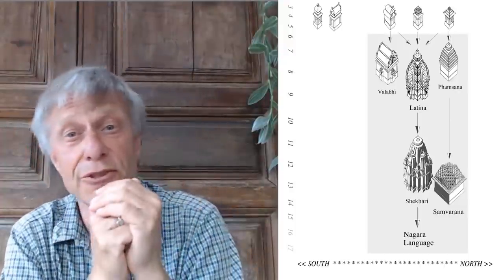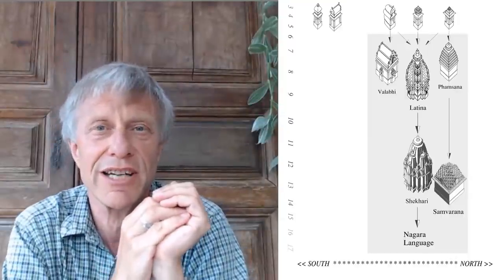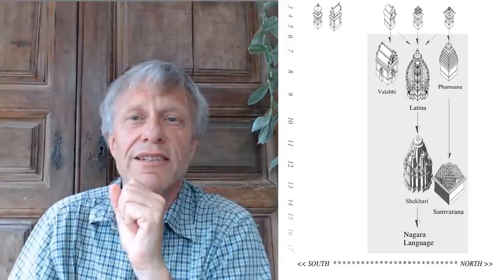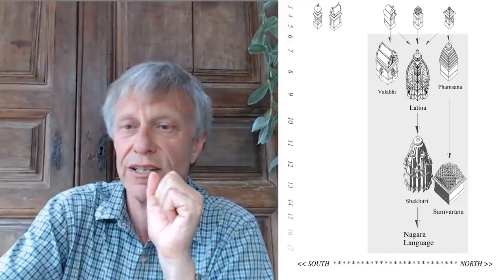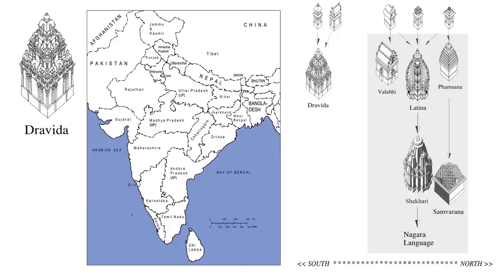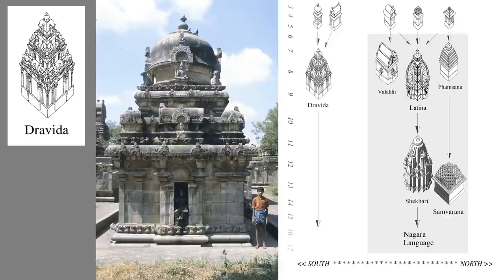But what about the other two early forms — the kuta-topped and the shala-topped shrines? Well, at the same time as the Nagara language was forming in the north, in the south we have the creation of the Dravida. The Dravida emerges out of pan-Indian traditions, and we've already seen hints of it in those shalas and domed kutas at Ajanta. The formative beginnings appear across this region, and then it really gets going all across here. The tradition continues through the centuries until today.